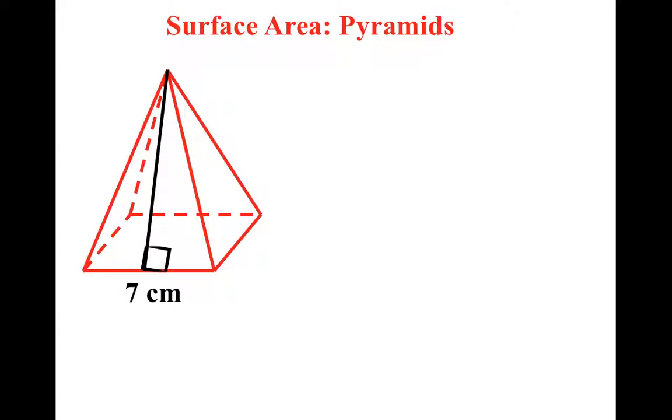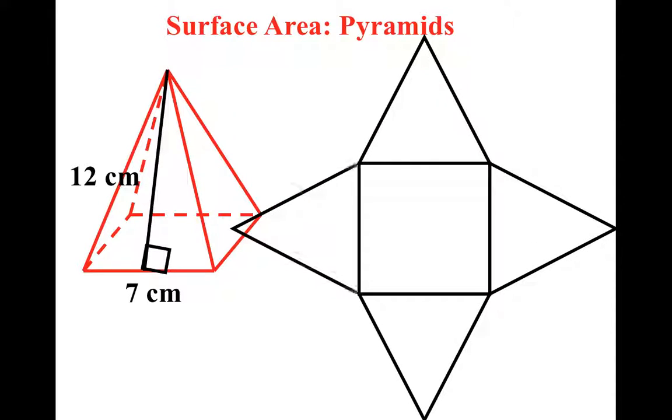So if we want to find the surface area, just like in other surface areas, the very first thing we have to do is take this three-dimensional figure and be able to lay it flat. It's called a net. So you'll notice this is the base, that's the square, and if you peeled back all of these triangles and laid them flat, that's what it would look like.